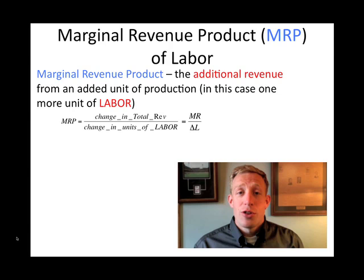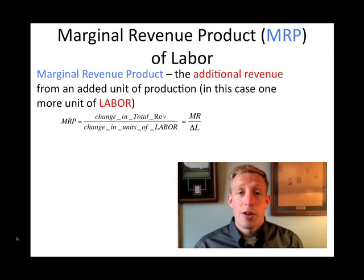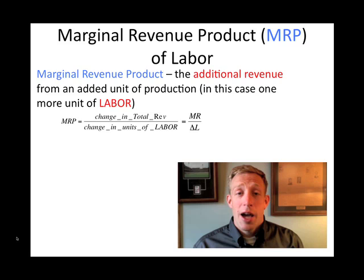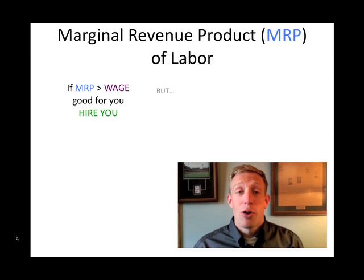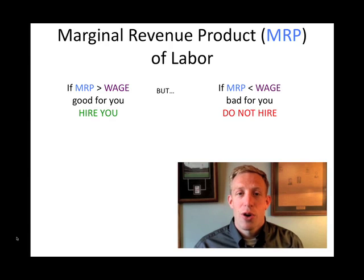What the firm wants to do is determine whether or not that additional revenue is greater than, or at the very least equal to, the wage being paid to the worker. If marginal revenue product is greater than the wage, that means you are contributing to the firm — you are more valuable than if they didn't hire you — and so it would make sense from a numbers perspective to hire you. If your additional revenue is less than the wage, however, then a firm probably won't hire you because you're not bringing in enough to at least cover the costs you are adding to the firm.